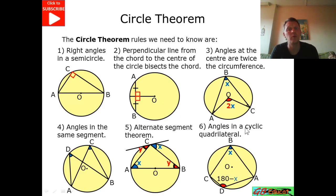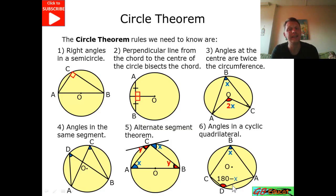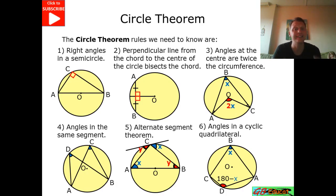Our other rule is angles in a cyclic quadrilateral. By this, we are saying that if we've got angle X, the angle opposite it has got to be 180 take away that angle on the opposing side. So D will be 180 take away X.